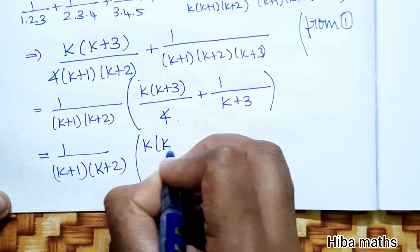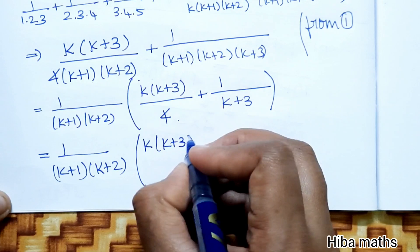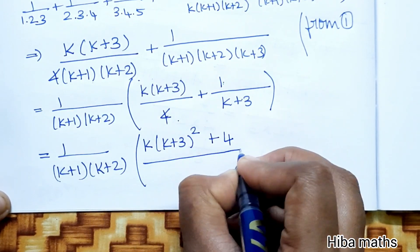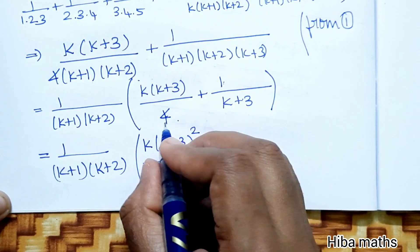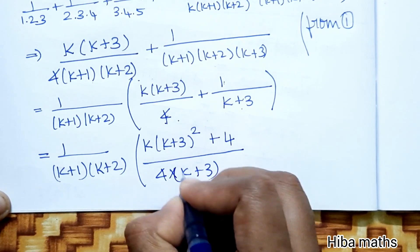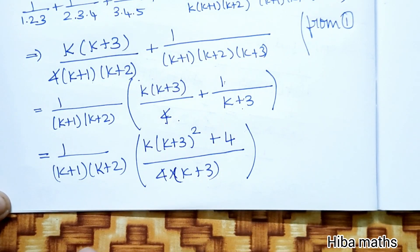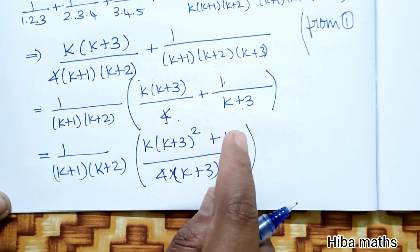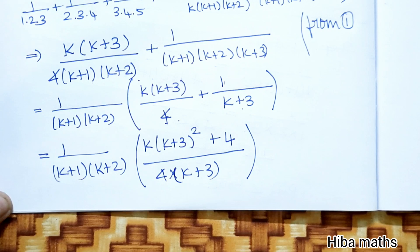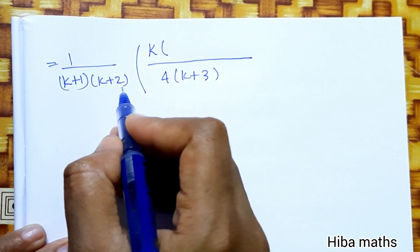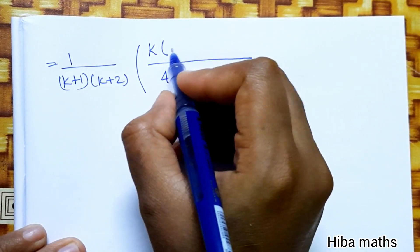Cross multiplying: k(k+3)·(k+3) + 4 / [4·(k+1)·(k+2)·(k+3)]. Expanding the numerator: k(k+3)² + 4, divided by 4·(k+1)·(k+2)·(k+3).